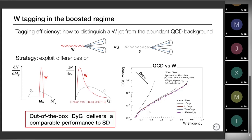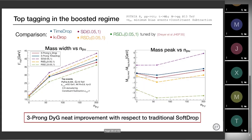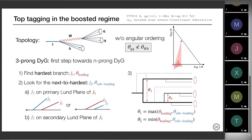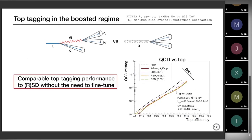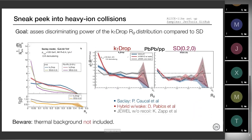We can also extend this to a three-prong final state and get very similar results — the money plot for top versus QCD discrimination. In this case kt drop performs as good as recursive soft drop, and it's a very straightforward extension of the method just to account for the third prong. Now, as some of the audience is more interested in heavy ions, we can extend this approach to heavy ion jets. One of the questions we ask ourselves is whether dynamically groomed substructure observables are more sensitive to medium effects than traditional soft drop.